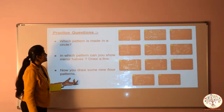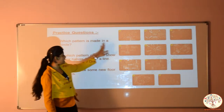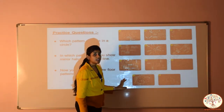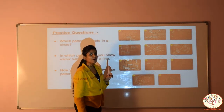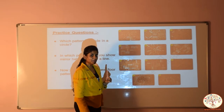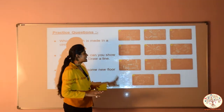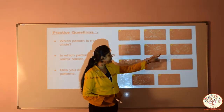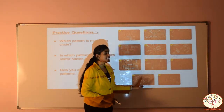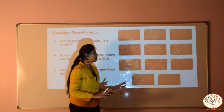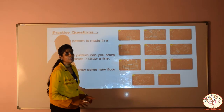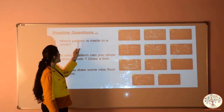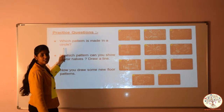Now these are some practice questions. See, how many images are given here? These are brick floor patterns. Let's count how many pictures are given — 1, 2, 3, 4, 5, 6, 7, 8, 9, 10, 11. So 11 brick floor patterns are given here. Let's see question number 1: which pattern is made in a circle?